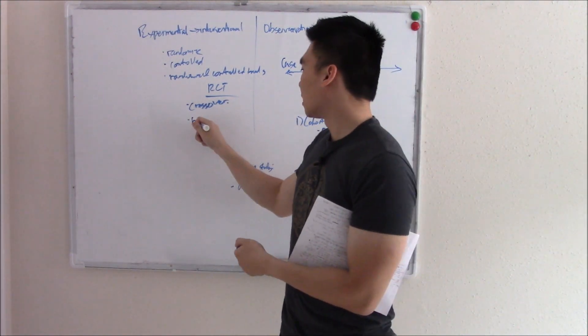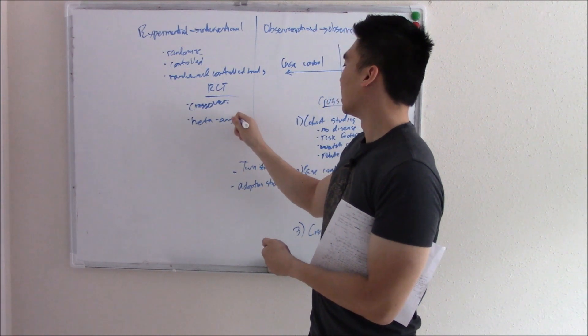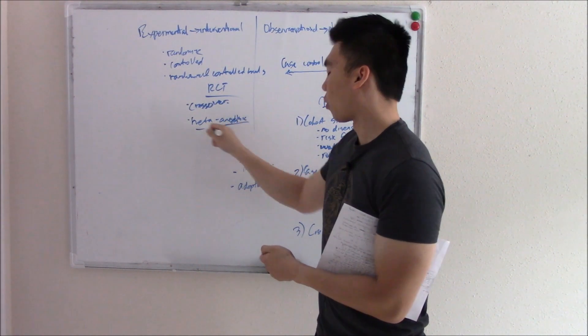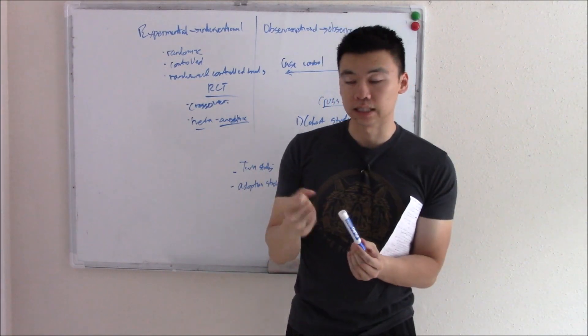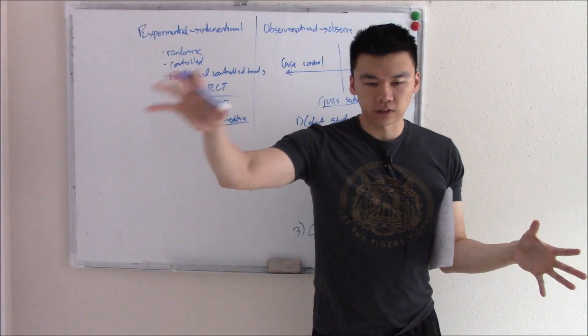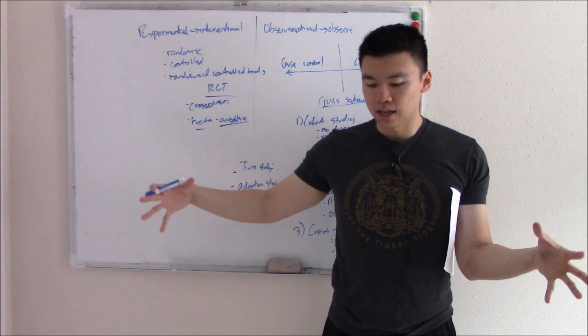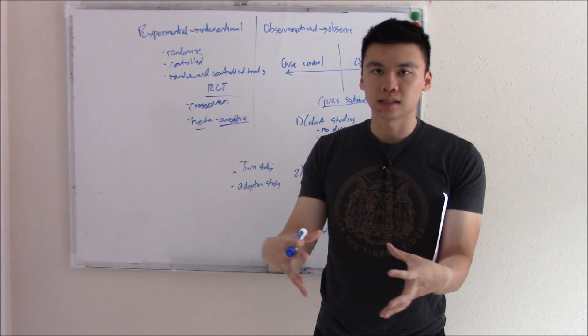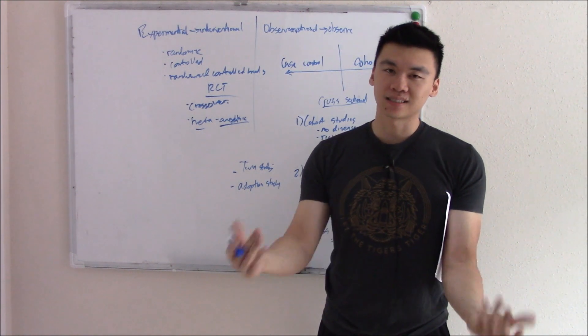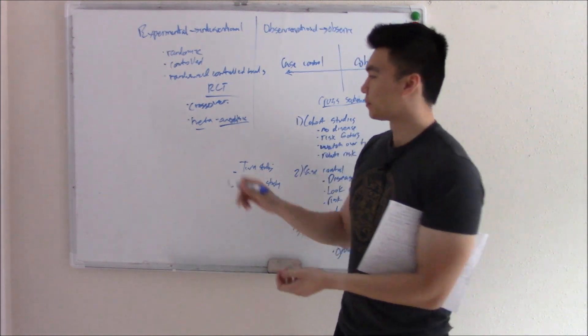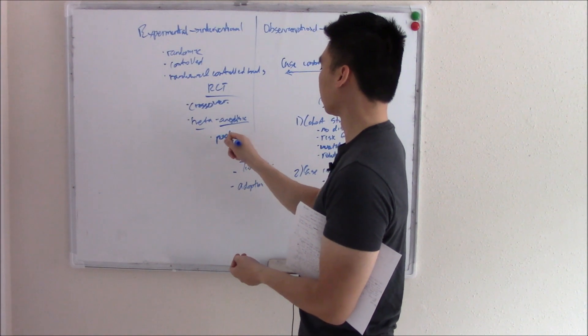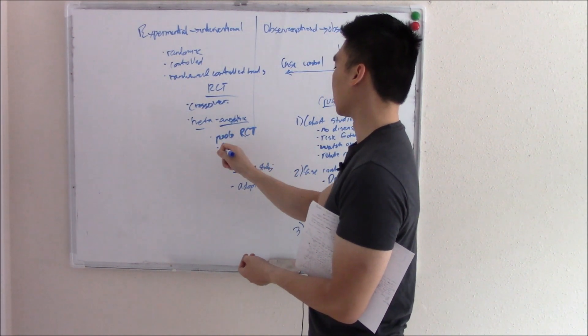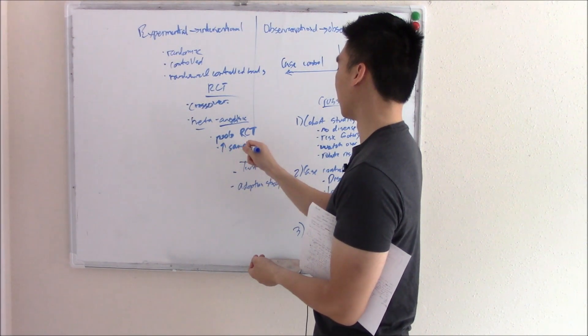You can have something called meta-analysis. Meta-analysis is one of the more important and powerful studies because it gathers different randomized control trials and pools them together. When you pool them together, you get a bigger sample size. And anytime you get a bigger sample size, it makes things a lot better. So pools similar trials together, increases your sample size. Fantastic.